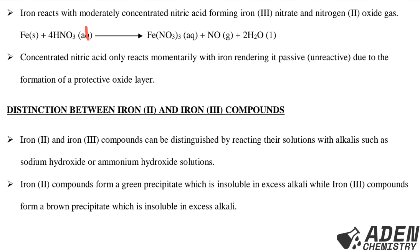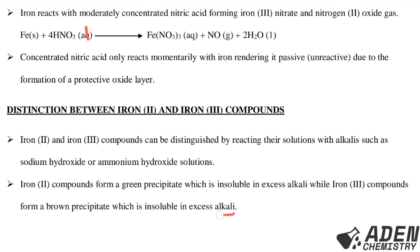The distinction between iron(II) and iron(III) compounds: they can be distinguished by reacting solutions with alkalis such as sodium hydroxide or ammonium hydroxide. Iron(II) compounds form a green precipitate insoluble in excess alkali. Iron(III) compounds form a brown precipitate insoluble in excess alkali, whether sodium hydroxide solution or aqueous ammonia.